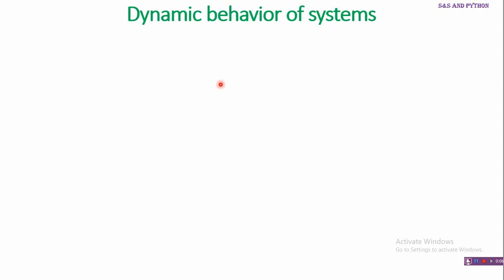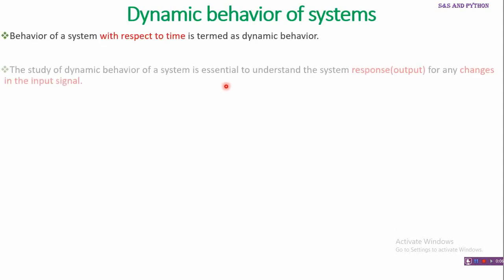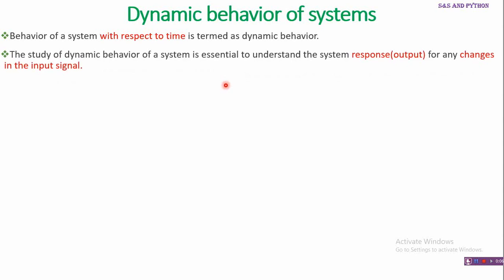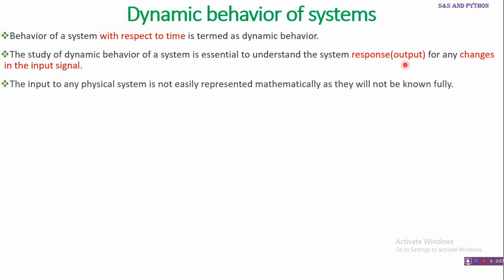Next, what is meant by the dynamic behavior of a system? The behavior of a system observed with respect to time is termed the dynamic behavior of the system. The study of dynamic behavior is essential to understand the nature of the output for any changes in the input signal — how the output varies and how it behaves when an input signal changes from its normal value.